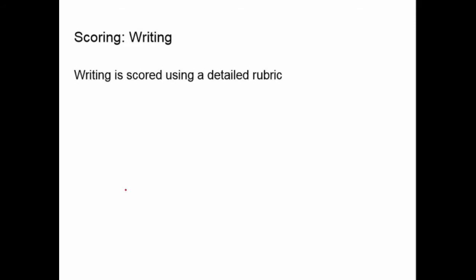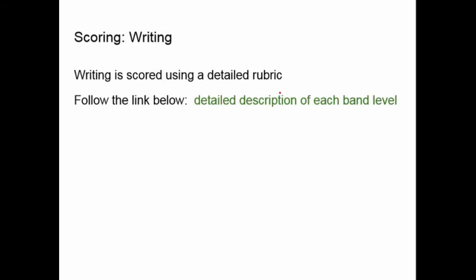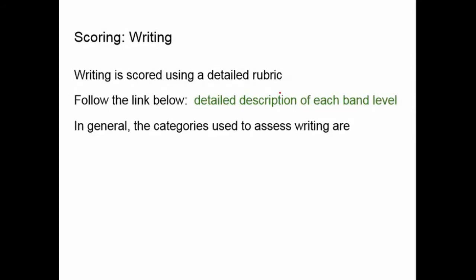Writing is scored using a rubric — different categories to analyze your writing. Each category has things they're looking for; if you did something well your score in that category goes up, and if you didn't it goes down. The categories they're looking for in writing can be described as follows.